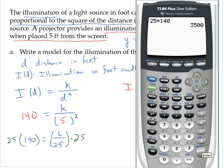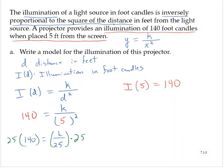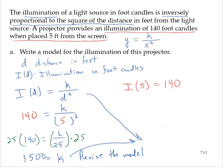We find that k is 3,500. All right, so we take our model and revise it with the k value. I(d) is equal to 3,500 over d squared.